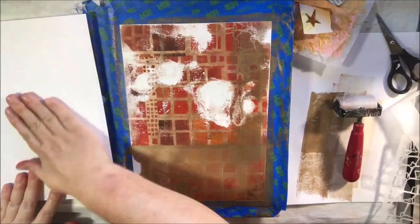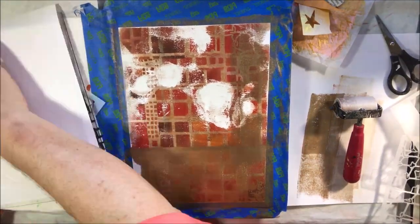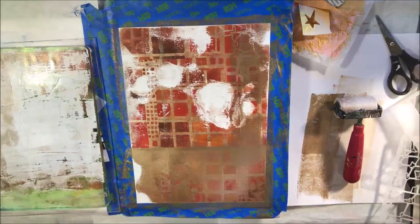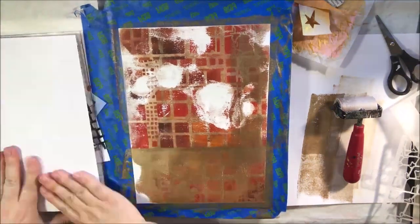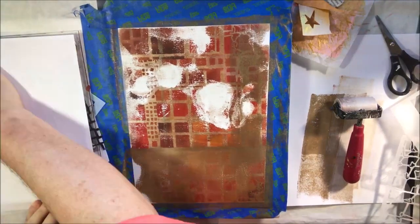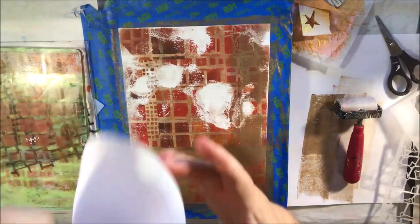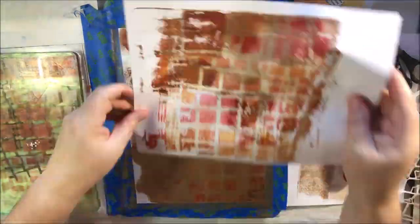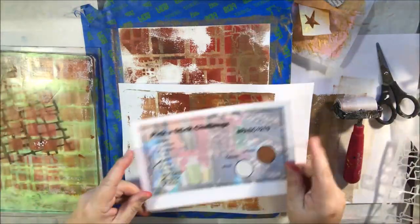My brilliant idea to use my gel plate in this case wasn't so brilliant because of all the texture in this book. This is the second to the last clean page. The one next to it is the last page, so it's thick, chunky, with all kinds of pages that have buttons, fabrics, texture paste, all kinds of stuff.